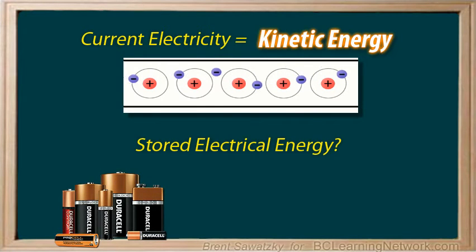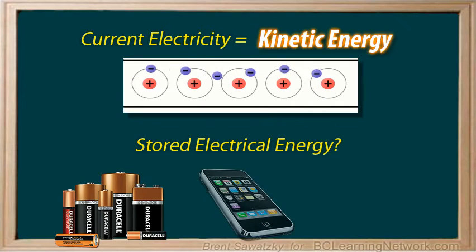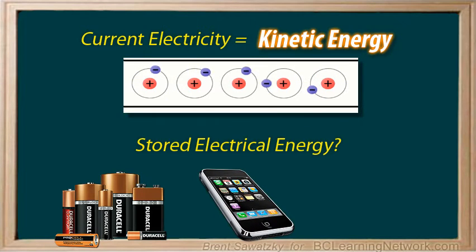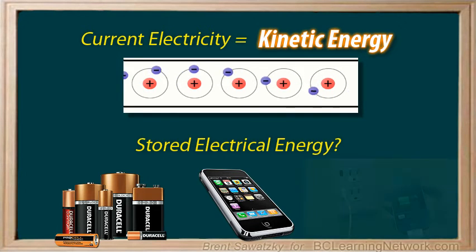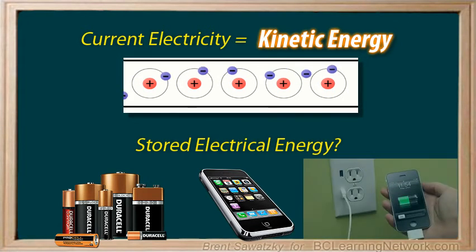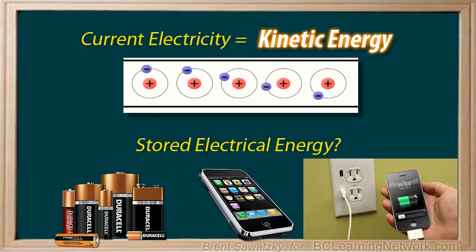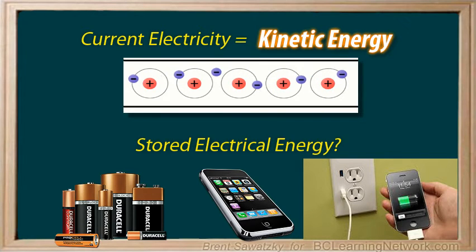Batteries allow us to walk around with a bunch of stored, or potential, energy. And when we want to use our device, the stored or potential energy is converted into current electricity, or kinetic energy. And when we charge up our device, that current electricity or kinetic energy is used to build up our potential energy.